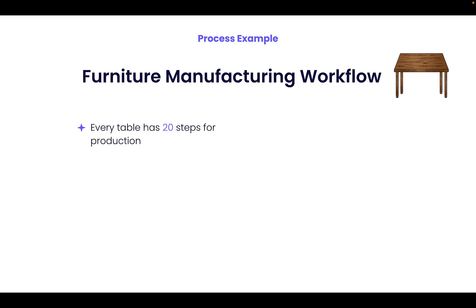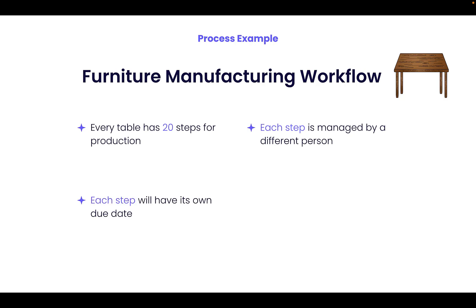For example, let's say we are managing a manufacturing process to track all steps needed for building tables. Each new table has 20 different steps involved, each run by a different person with their own due date. We would also need to track the status for each step since they are dependent on one another. We would usually choose a horizontal board using columns to manage it, since this process is repetitive and predictable. However, since each of those 20 steps would need a status column, a date column, and a person column — amounting to 60 columns — this would impact board performance.